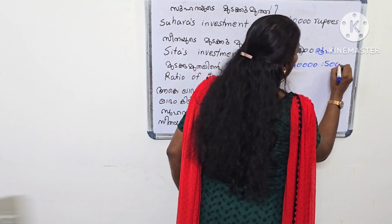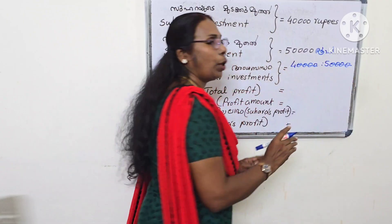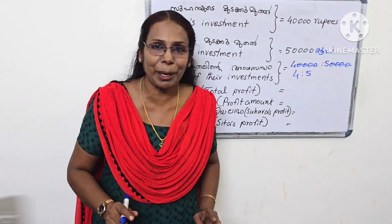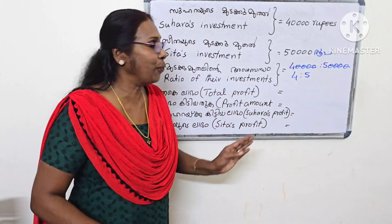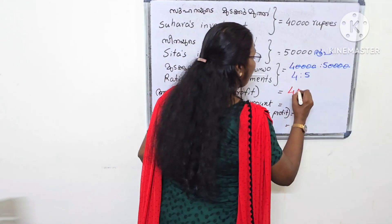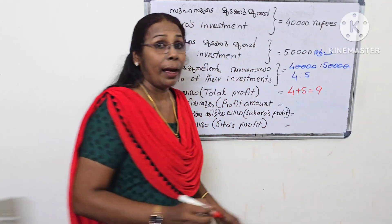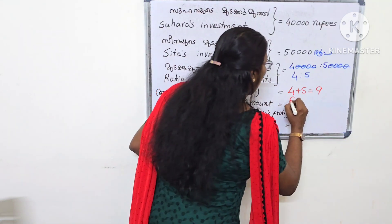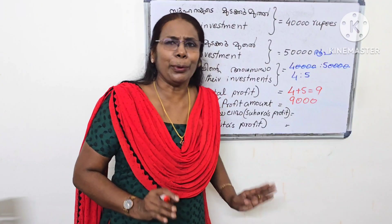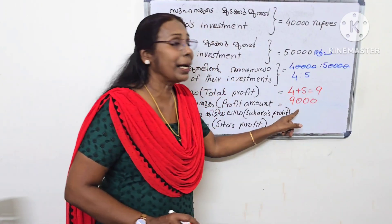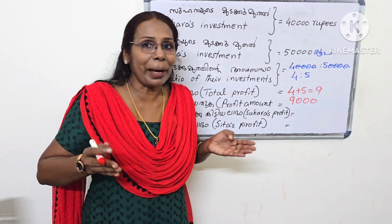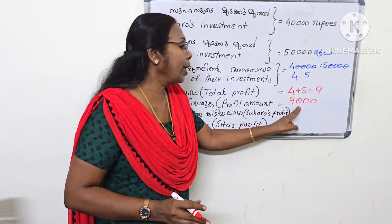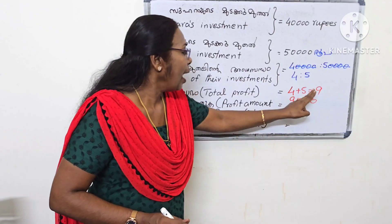The ratio is 4 is to 5. We have to raise the total profit for the ratio 4:5. 4 parts are equal to 5 parts. The question is: how much profit is each person's share? The answer is based on the ratio 4 and 5.